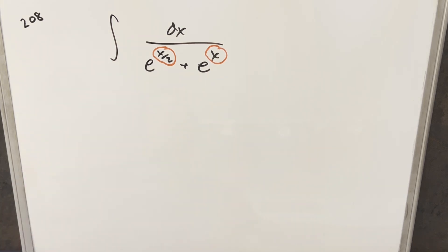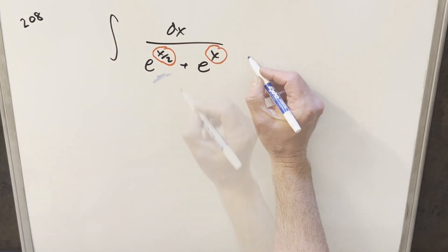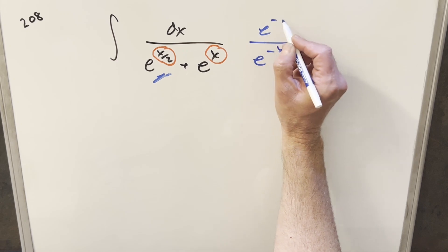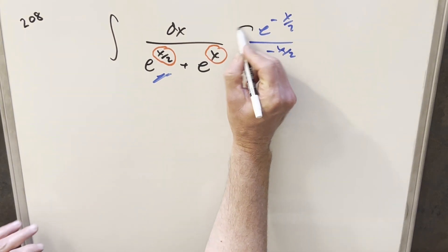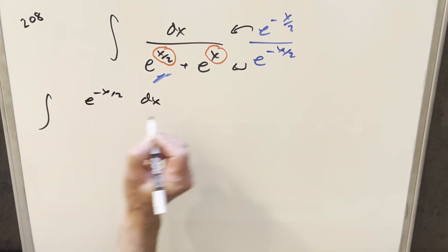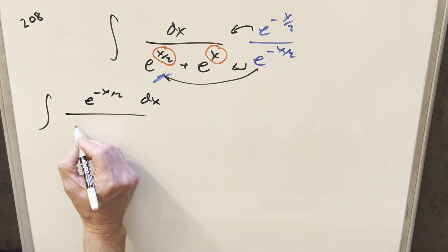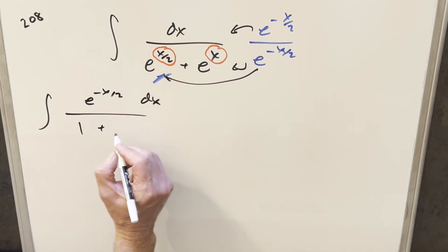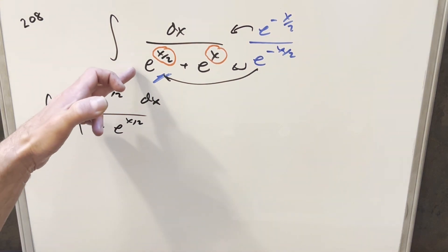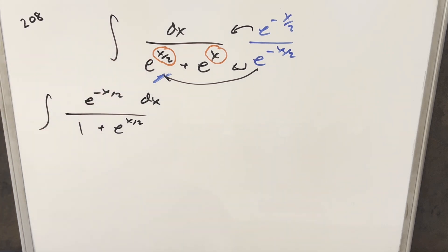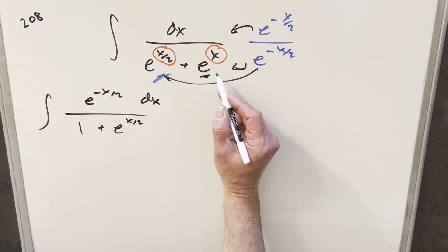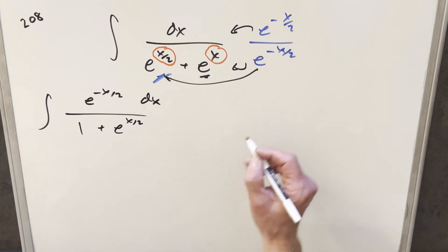My whole concern is how can I fix this exponent situation so this is easier to deal with? What I'm going to do is multiply through by e to the minus x over 2, doing the same thing in the numerator. So we'll multiply everything top and bottom. We end up with e to the minus x over 2 in the numerator. The first term becomes 1 because we get e to the 0, and the second term becomes e to the x over 2. This reminds me of a similar problem with different exponents. Let's just do the u substitution.